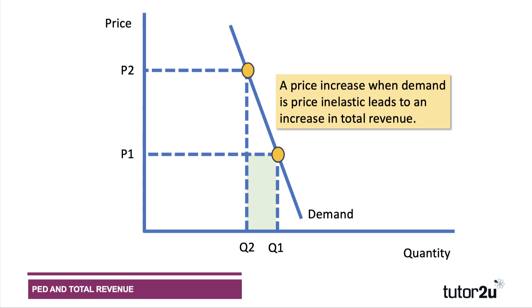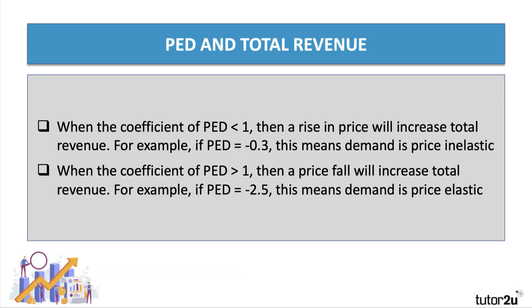On one hand, we're selling less, so there's a loss of revenue from the reduction in units sold — that reduction is Q1 to Q2. On the other hand, there's additional revenue per unit from selling at the higher price P2. In this situation, the orange area is bigger than the green area, showing that total revenue will go up.